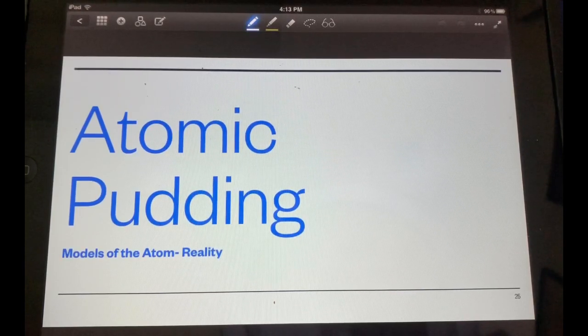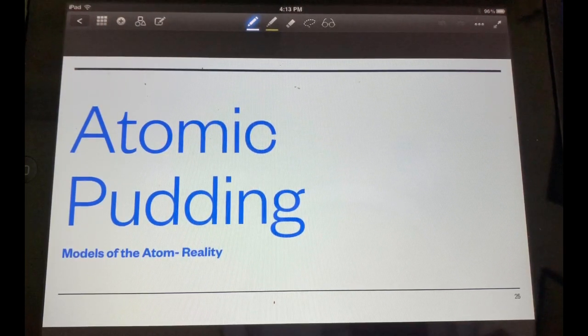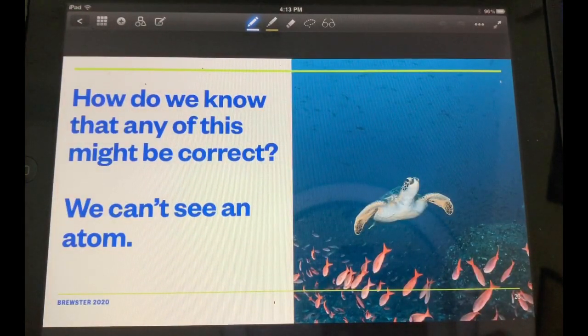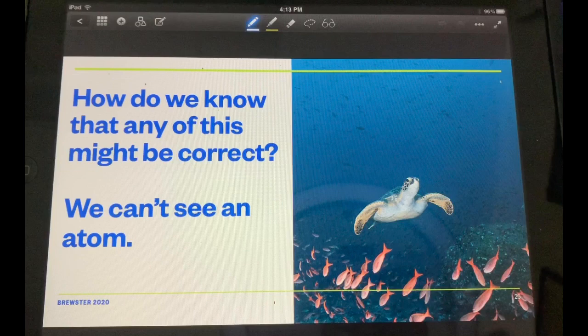More on this atomic pudding, the models of the atom. So how do we know that any of these are correct? I mean we can't see an atom. So since we can't see an atom, how do we know?